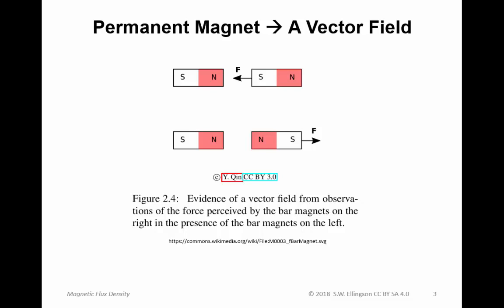A permanent magnet creates a vector field. You can verify this for yourself by taking a bar magnet — consisting of a south pole and a north pole — and arranging another bar magnet next to it. You know that opposite ends attract each other, and if you rotate that around so north faces north, you know that north repels north. So force in this case is a vector field somehow associated with the phenomenon of magnetism.